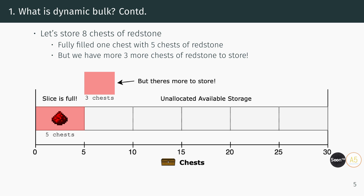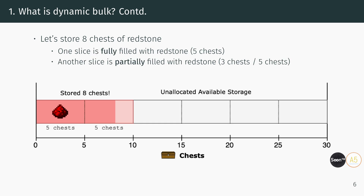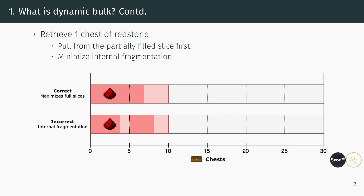However, with 3 more chests to store, another slice must be allocated to accommodate the remaining items. In the end, we have one fully filled slice of redstone and another slice with some leftover storage space. This non-full slice is known as the partial slice, and it'll be important for retrieval later. Tracking the partial slice is crucial because it is best to empty it first when retrieving items. This strategy prevents cumulative fragmentation, which can lead to wasted storage space over time.